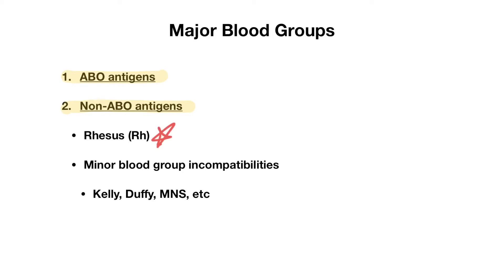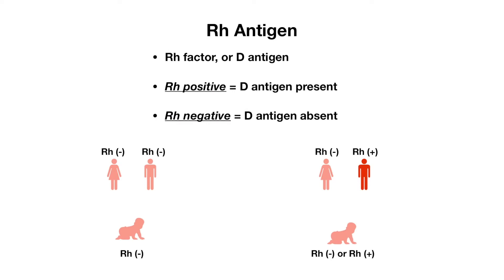There are also some other minor blood group incompatibilities that can result, but because these are not as significant or as common, we will not discuss these in this video. The RH antigen is also known as RH factor or D antigen. If a person is RH positive, this means they have the D antigen present on their red blood cell surface. If they are RH negative, that means the D antigen is absent.